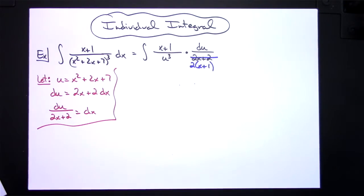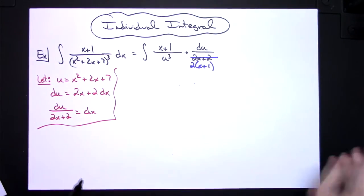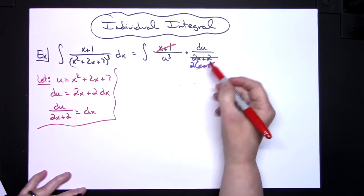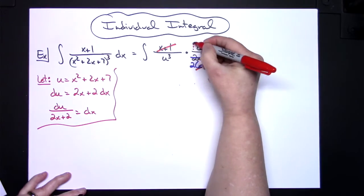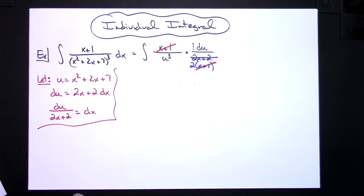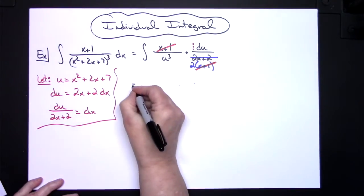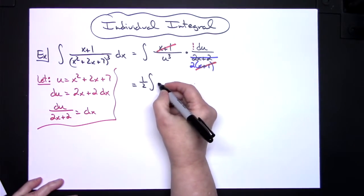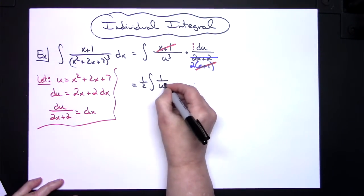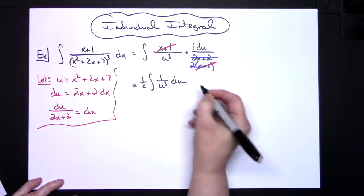That's going to allow the x plus 1s to cross out. That also lets you see that there's an imaginary 1 half that needs to be pulled out in front of this integral. So I'm going to have 1 half out in front, the integral of 1 over u to the third du at that point.